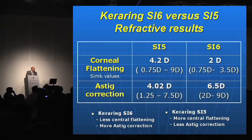Regarding refractive results: with SI5 we achieve 4.2 diopters of flattening, with SI6 just 2 diopters. But for astigmatism correction, we have more correction with the 6 mm ring compared to the 5 mm ring. So we can conclude that SI6 provides less central flattening and more astigmatism correction, whereas SI5 provides more central flattening and less astigmatism correction compared to SI6.